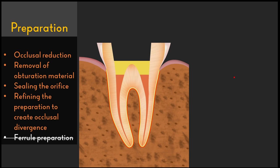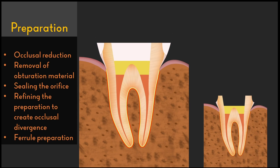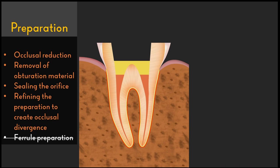Depending upon the type of material you are going to use for the endocrown, the type of ferrule preparation can be modified. If the remaining tooth structure is very limited, or if you decide not to give a ferrule preparation, that is also acceptable for an endocrown. The retention for the crown is not taken from the external surface of the preparation, but mostly from the internal surface — which prevents crown dislodgement because there is more surface area covered by the crown.